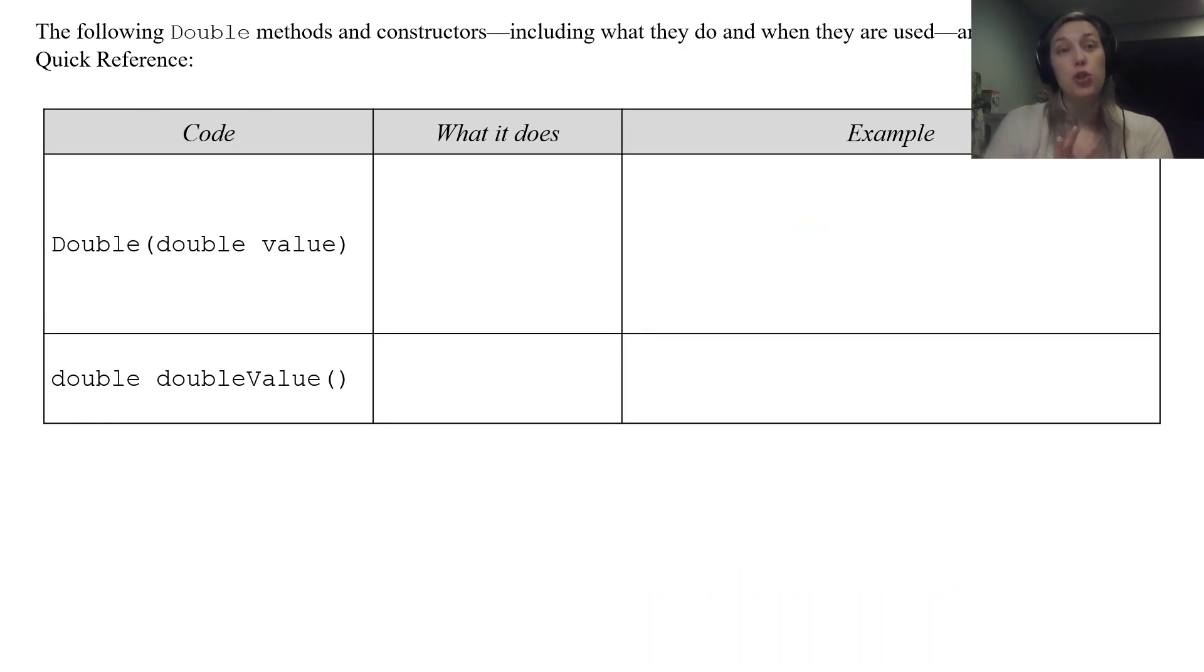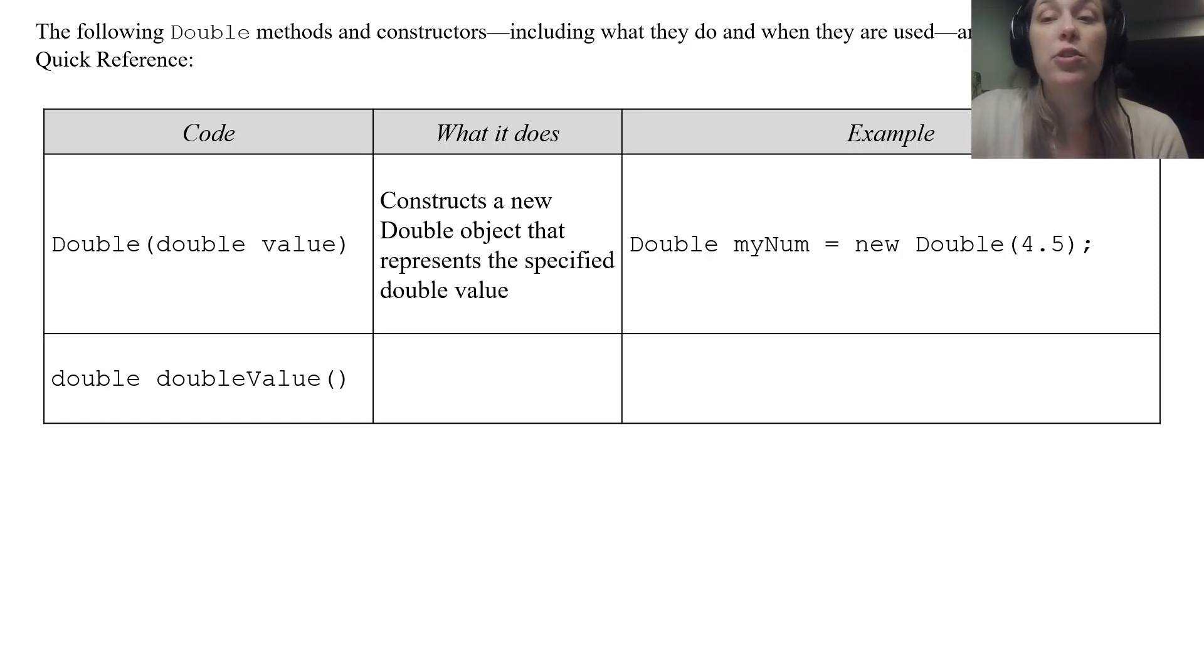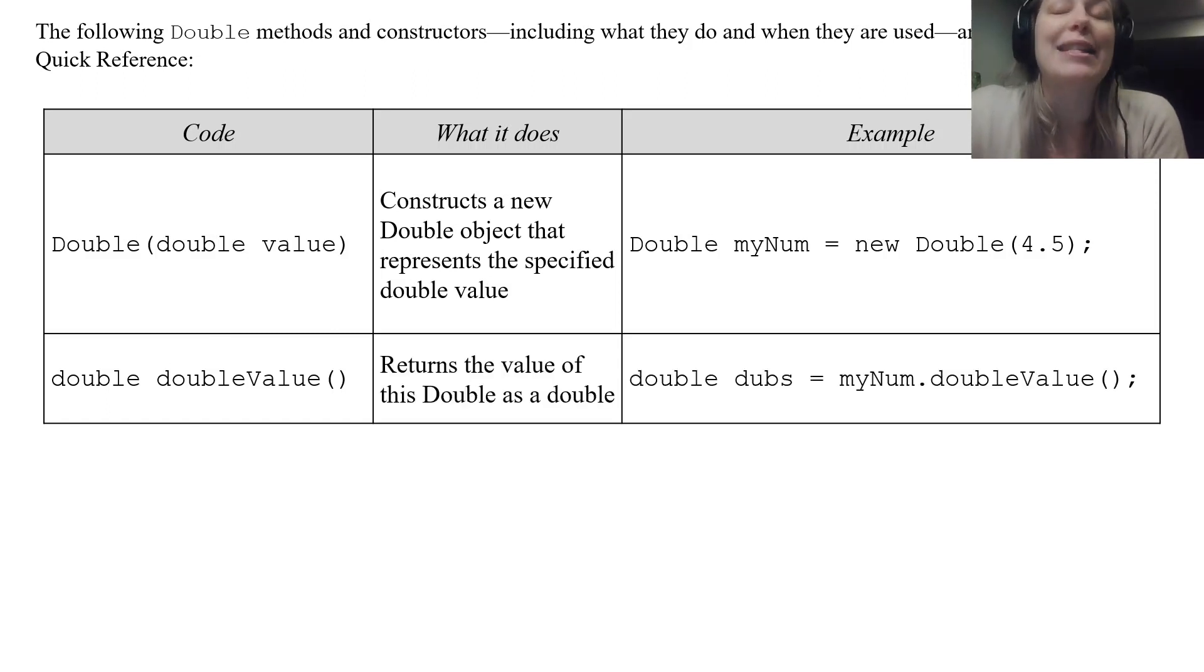For Double there's only two you got to know and that's the constructor and the method that returns the value as a double. So here's the constructor for the Double object. Again you can see it kind of looks just like the Integer object, just like any other object we would create in Java, it just has Double. And then the doubleValue works the same as intValue that we just saw where if you construct an object called myNum you use that same object reference, you call on that method and it returns a value, the 4.5, and stores it in a primitive data type.